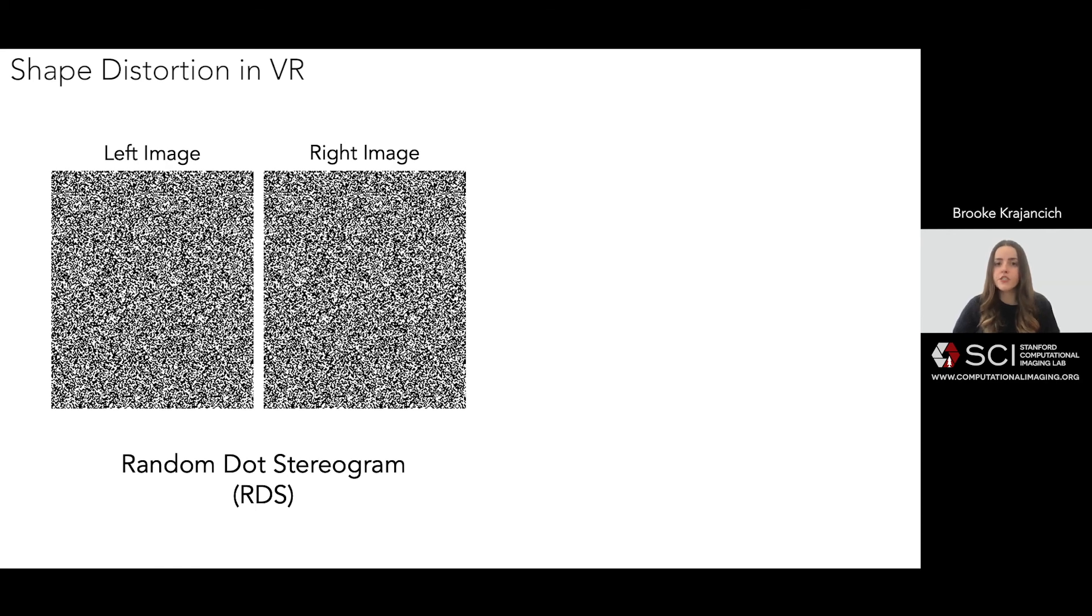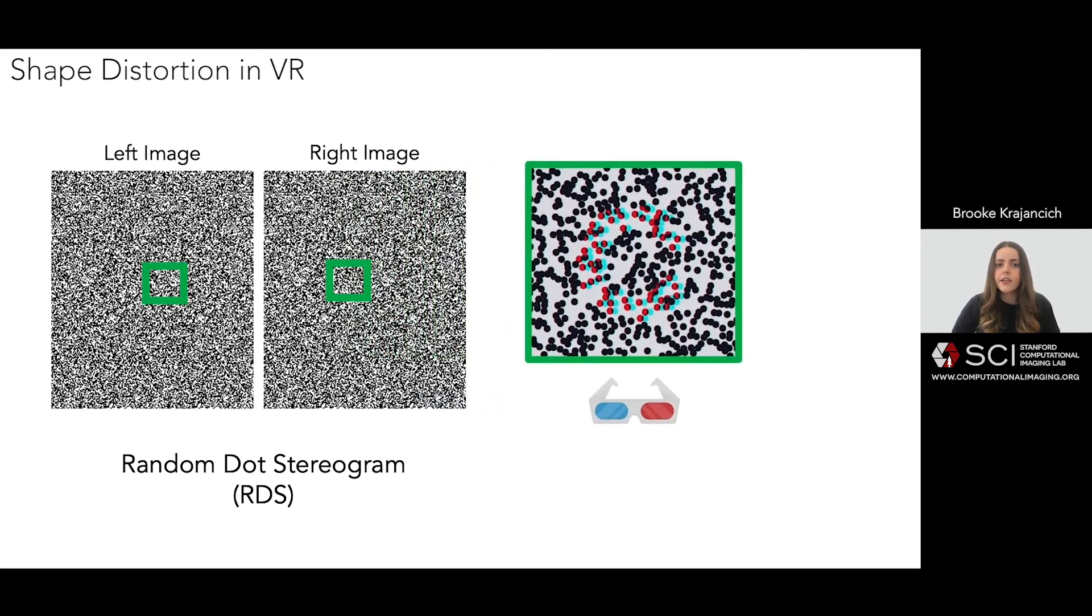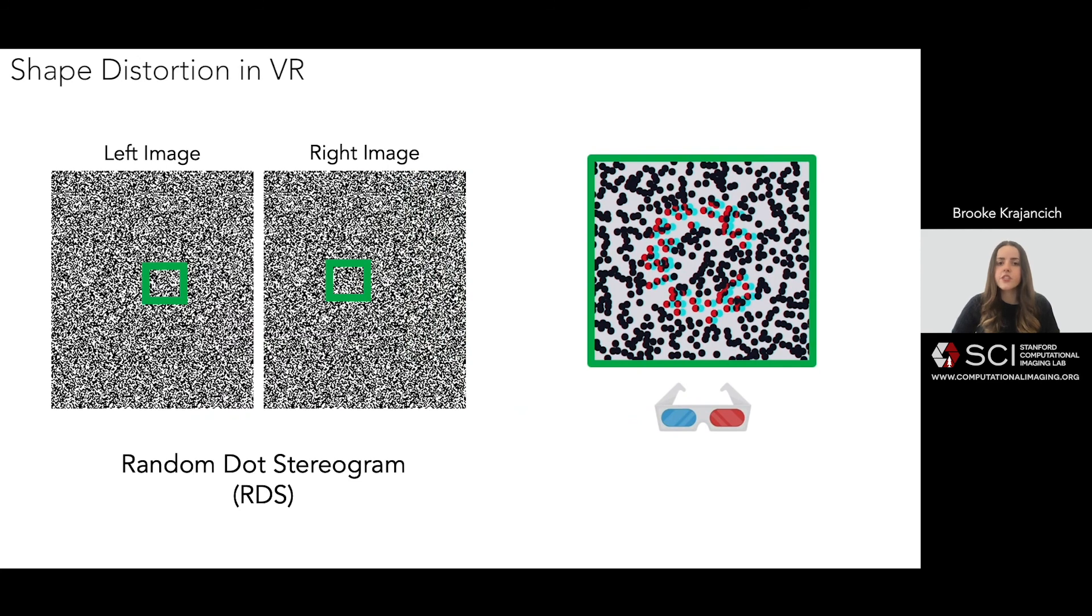So for this purpose, we used a random dot stereogram stimulus. This is a stereo pair of images of random dots, which when viewed without a stereo display, just looks like the static that you used to get on old TVs. Zooming in and showing them with anaglyph, you can visualize that some of the dots have actually been shifted left and right by a calculated amount, producing the sensation of a specific depth, either popping in or jutting out of the display level.